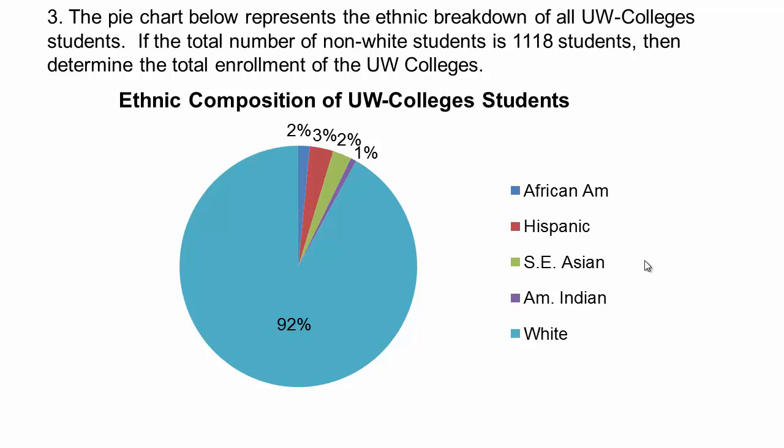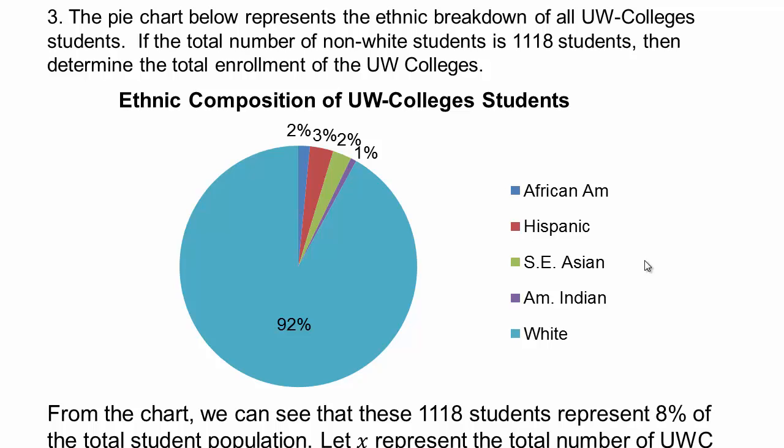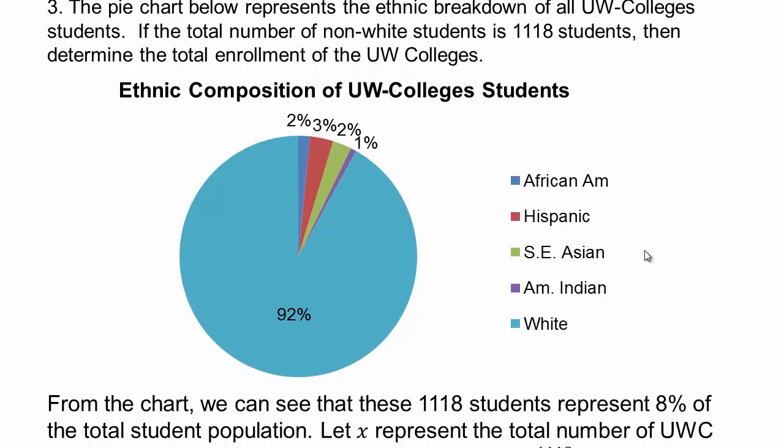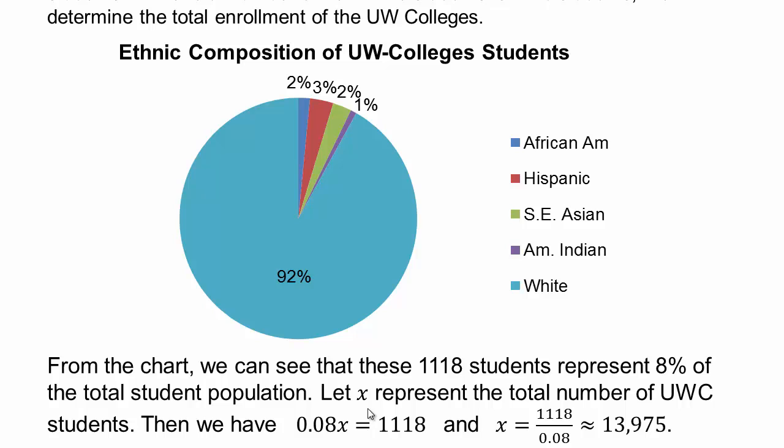From that, we can figure out what the total number of students are. So we'll say x is the total number of students since we do not know that number. And then 8% of that x is 1,118. So divide both sides by 0.08, and there's your approximate number of students.